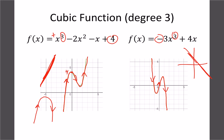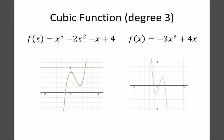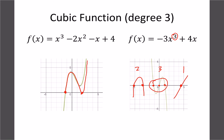One thing to be careful of: a cubic doesn't necessarily have to cross the x-axis three times. A third degree graph can have one, two, or three x-intercepts. Degree one typically has one x-intercept, degree two has up to two, and degree three typically has up to three — but not always. The degree tells you the maximum number of possible x-intercepts.